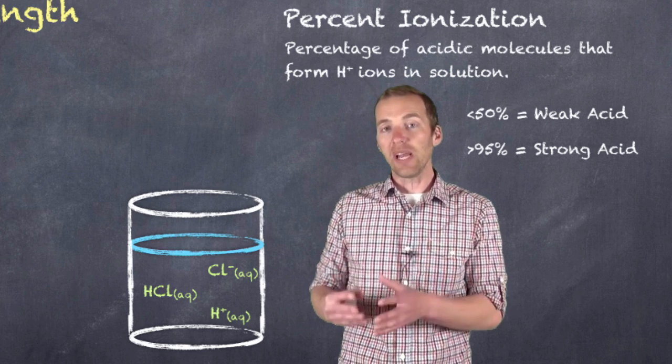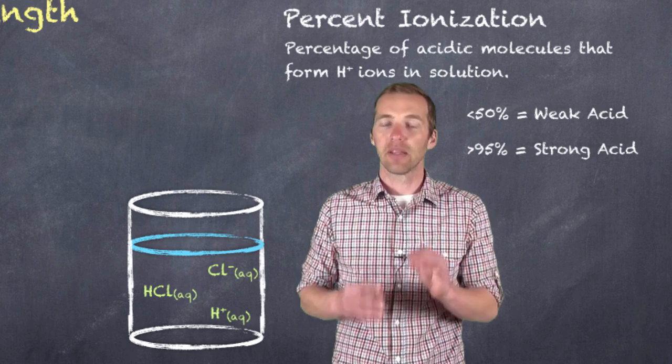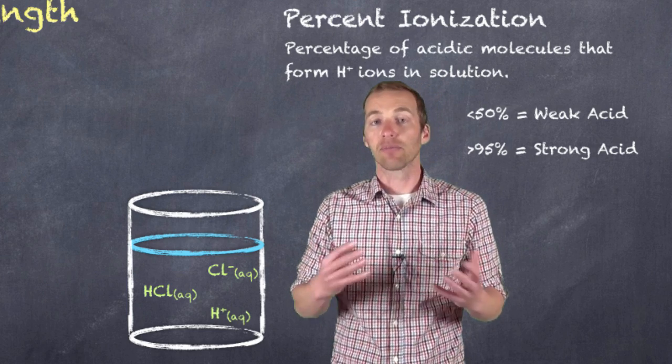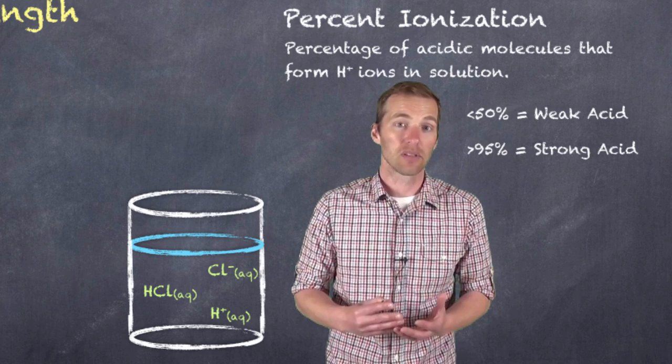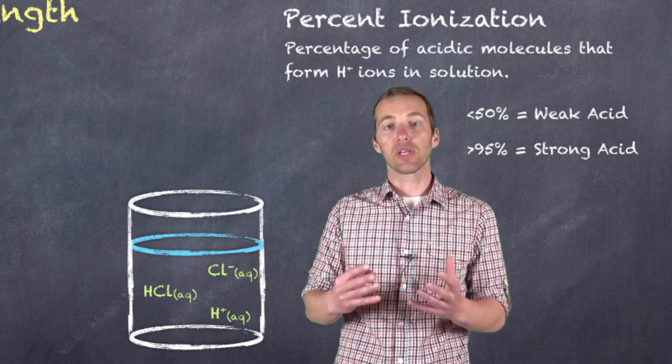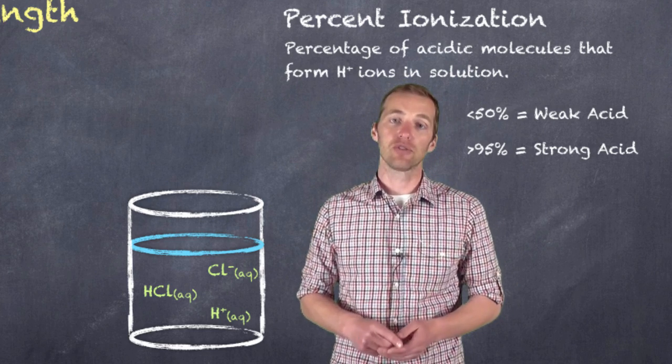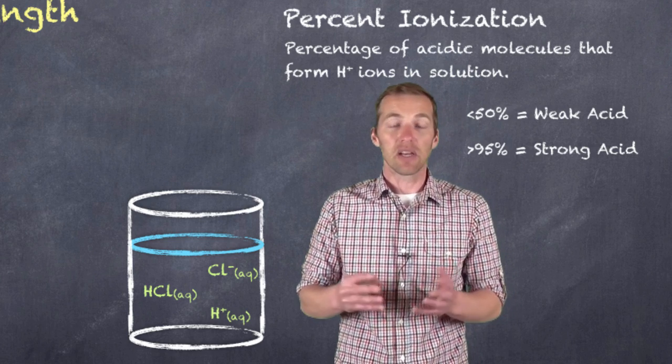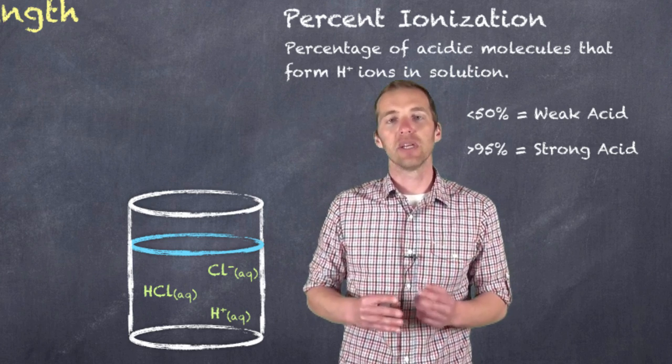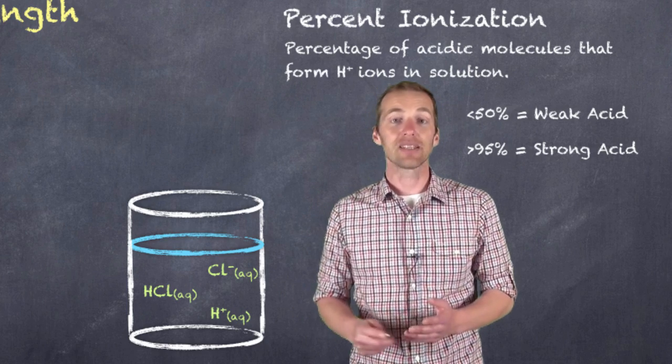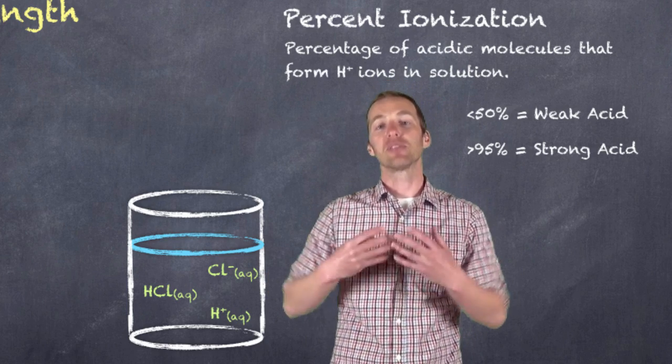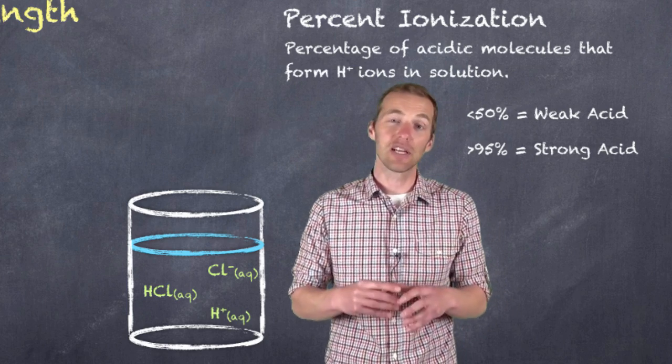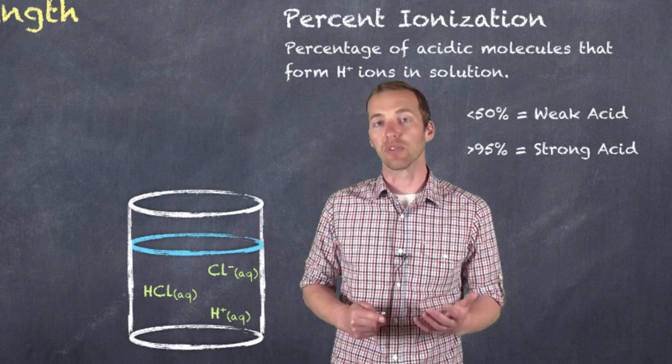Whereas weak acids ionize very little. That is, if we took a very weak acid, maybe only 3% or 1% of those molecules would actually form hydrogen ions in solution. So, in fact, percent ionization is giving us the real way that we establish whether or not something is a strong acid or a weak acid. And it depends on the percentage of hydrogen ions that are produced when that particular acidic molecule comes in contact with solution.